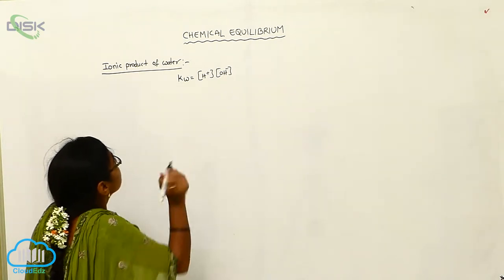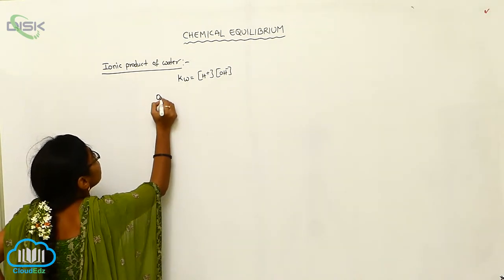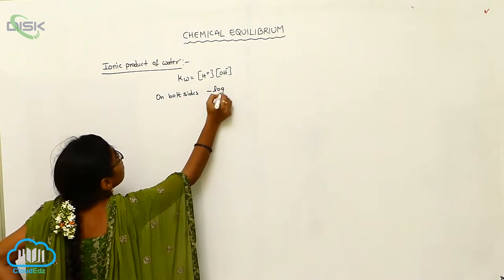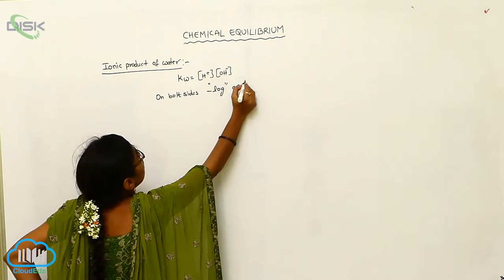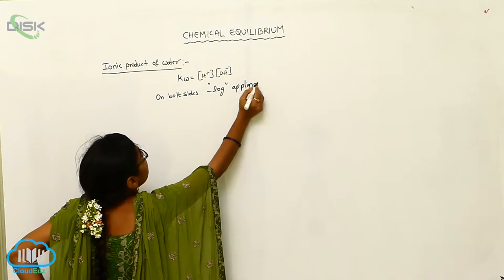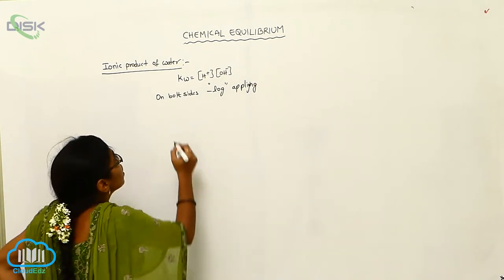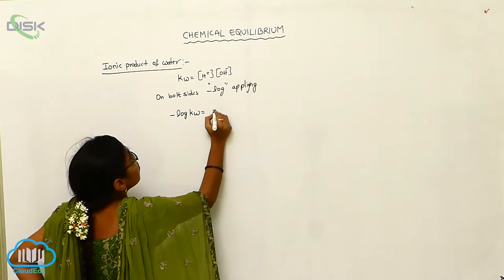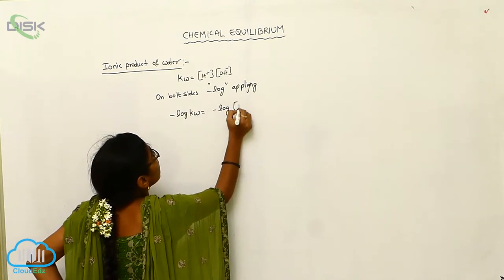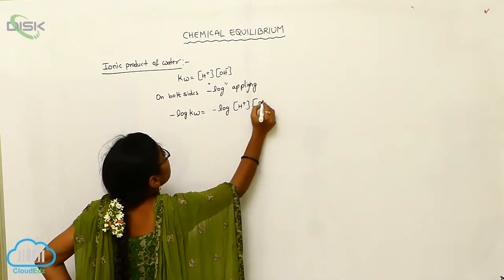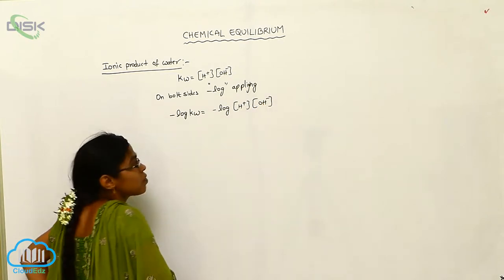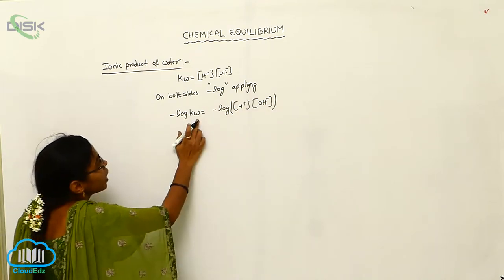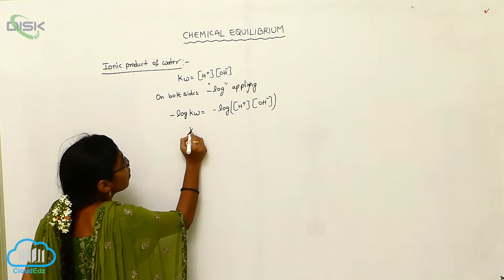Next, we apply minus logarithm on both sides of the ionic product equation. So we can write: minus log KW = minus log([H⁺][OH⁻]). Here, minus log KW is nothing but pKW.